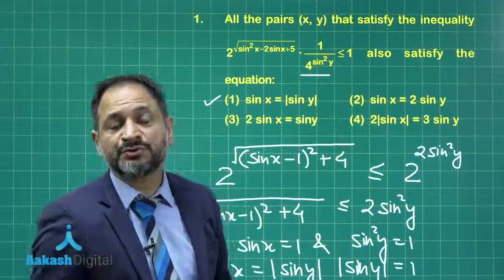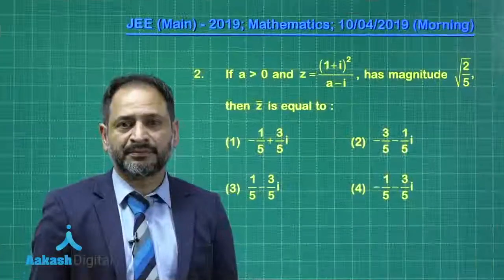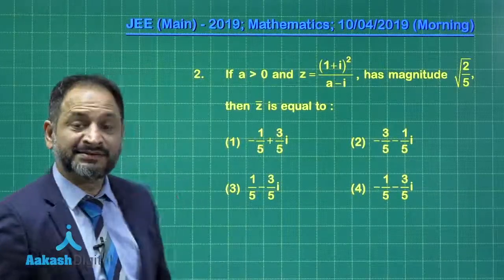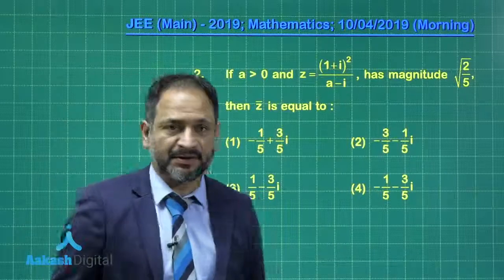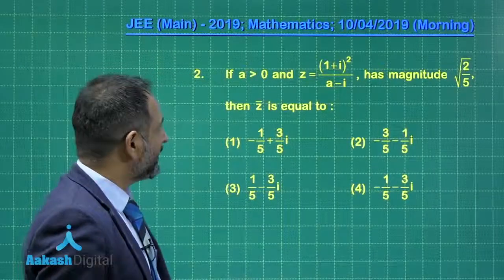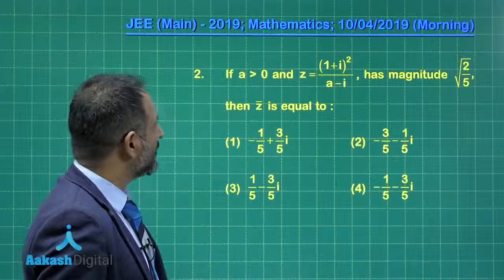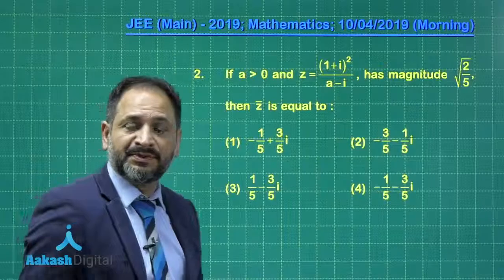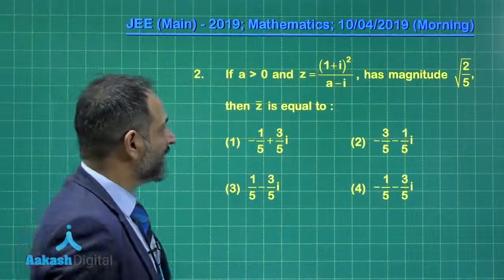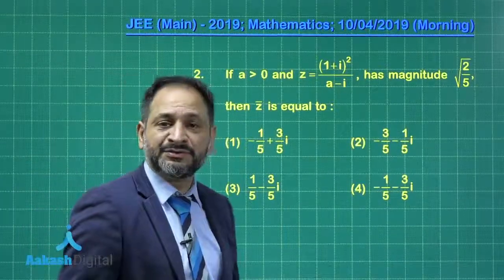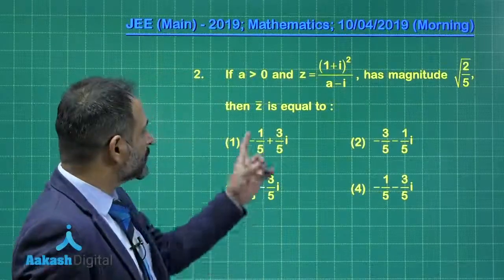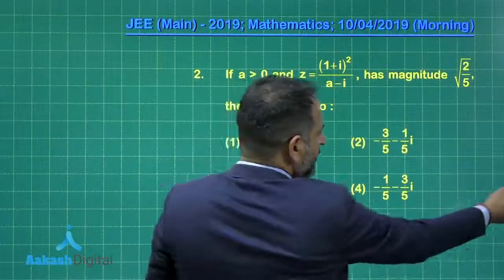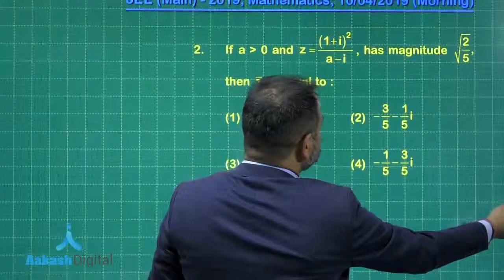Let us move on to the second problem. Now here we are on to the next problem. This problem is related to complex numbers. If a is any constant which is greater than 0 and z is a complex number, 1 plus iota whole square upon a minus 1 has magnitude root of 2 by 5, then the conjugate of z is equal to. Here we are having 4 options. Now the approach is important here, otherwise this question is going to be a lengthier one.